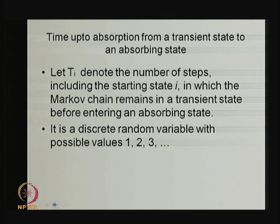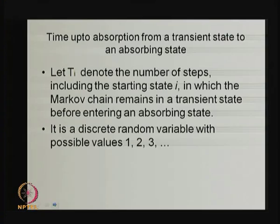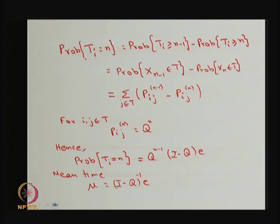For the mean time to absorption, I define the random variable T_i as the number of steps (including the starting state) the Markov chain remains in a transient state before entering an absorbing state. T_i is a discrete random variable taking values 1, 2, 3, ... Our interest is its mean, i.e., how long on average the system spends in transient states before absorption.